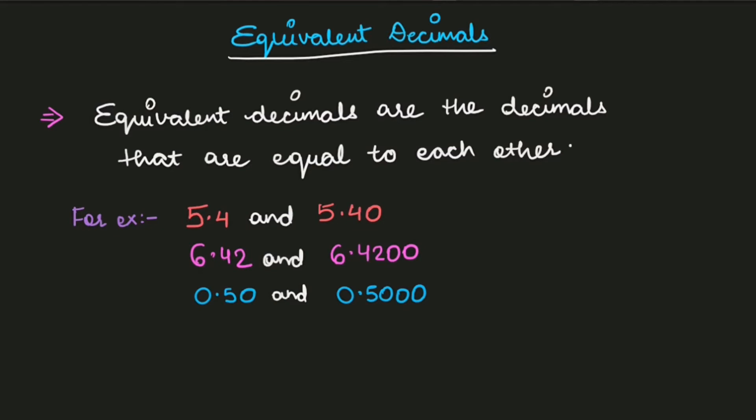That is the best part of equivalent decimals — you just need to check the main number and confirm it is the same in both decimals. The second example is 6.42 and 6.4200. Those two zeros have no value; we have added them just to make the decimals look alike, but these two decimals are equal because the same core number is 6.42.